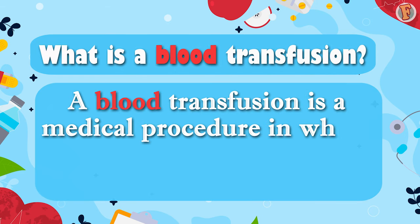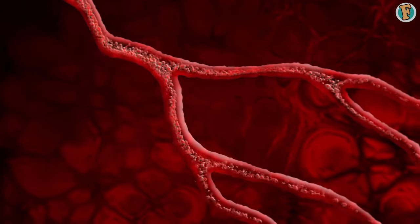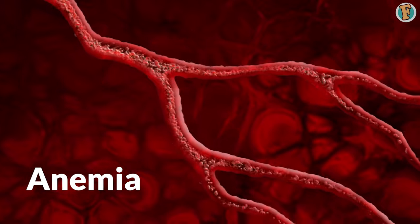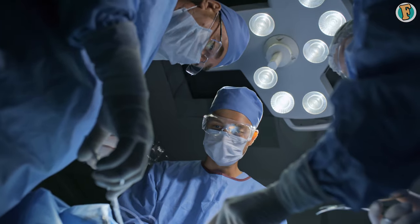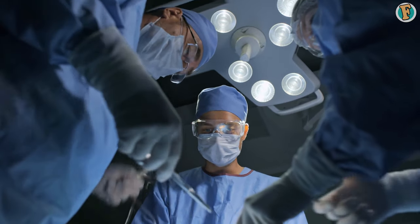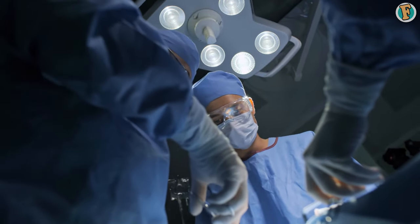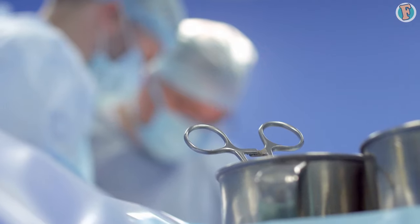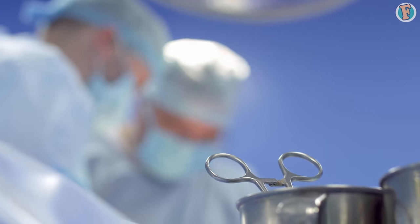A blood transfusion is a medical procedure in which blood is transferred from the donor to the patient. It can be used to treat various medical conditions including anemia, a disease in which the body does not produce enough healthy red blood cells, severe bleeding, and hemophilia, a genetic bleeding disorder in which the body does not clot properly. Transfusion can also be used to replace blood loss during surgery or after an accident. The procedure entails drawing blood from the donor and injecting it into the recipient's bloodstream via an intravenous line, also known as IV. Blood transfusion can save lives and improve the quality of life for many people suffering from certain medical conditions.